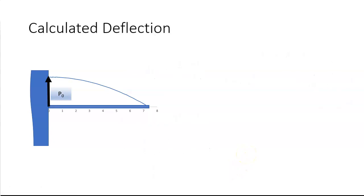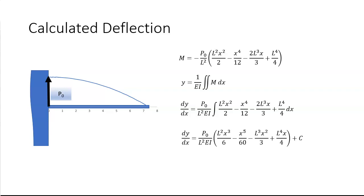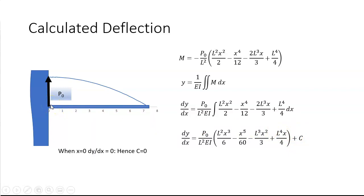To get the deflection, I need to do a double integral of the bending moment equation. Integrating once gives the slope: l²x³/6 minus x⁵/60 minus l³x²/3 minus p₀l²x/4 plus a constant C. At the fixed end, when x equals zero, there is no slope, so C equals zero.